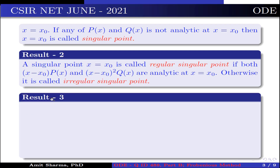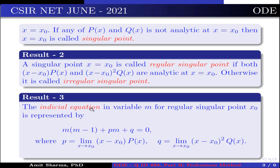Result 3: The indicial equation in variable m for a regular singular point x₀ is given by m(m − 1) + pm + q = 0, where p = lim(x→x₀) (x − x₀)·p(x) and q = lim(x→x₀) (x − x₀)²·q(x).